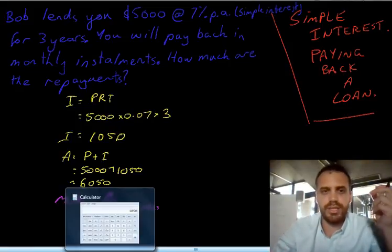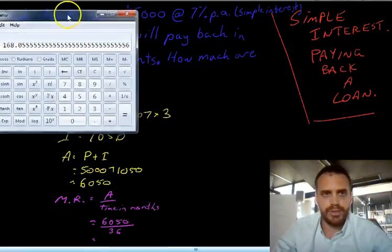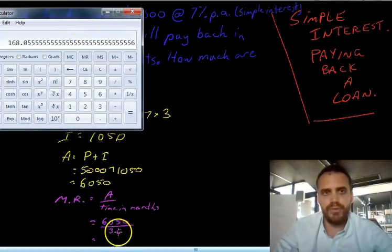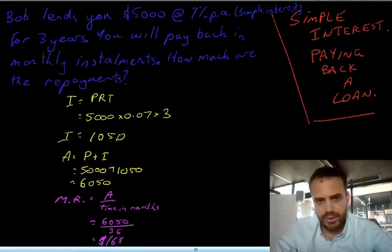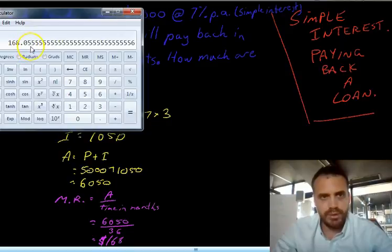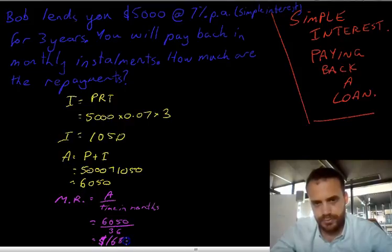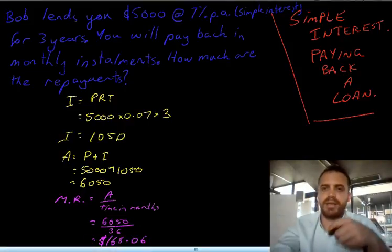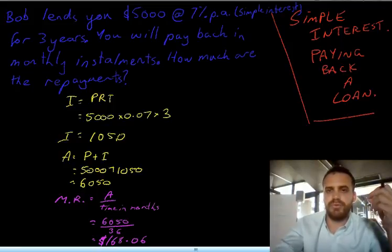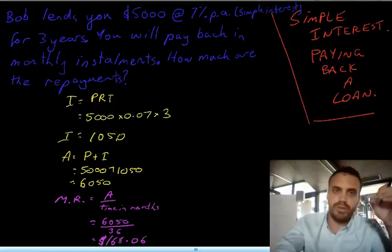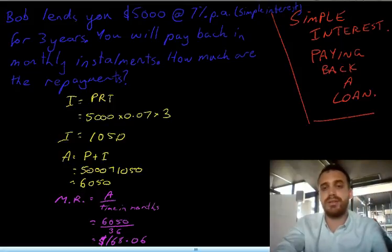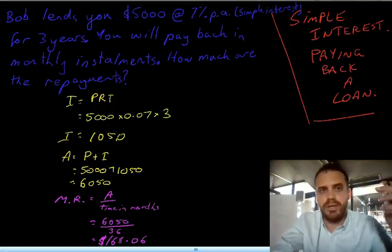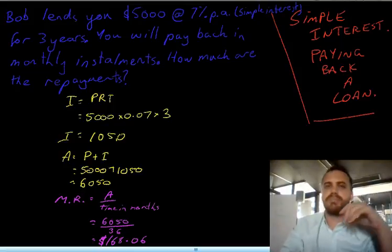Our calculator gives us a slightly awkward answer: $168.055555 repeating. We round that to $168.06 — to the nearest cent. So you pay him back that amount every month for three years, and eventually he'll get $6,050 back. You're happy because you needed $5,000 three years ago, and Bob's happy because he's been earning interest on money he had lying around spare. That's the way loans work. That's simple interest paying back a loan.